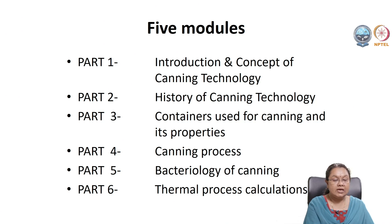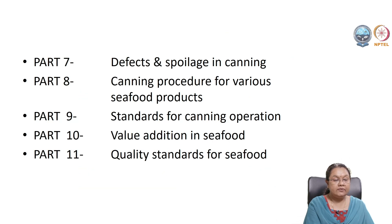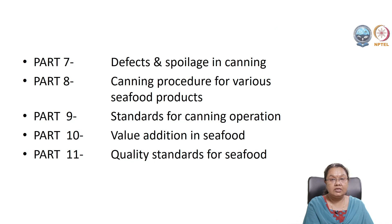In part six, thermal process calculations will be discussed in detail. Part seven covers spoilages of canning and methods to analyze them. In part eight, we will discuss canning procedures for individual seafood products. Part nine covers the standard operating procedures to be followed during canning. In part ten, value addition of seafood will be discussed, including various products developed from seafood byproducts. Finally, in part eleven, quality standards to be adopted in the canning process and other seafoods will be discussed.